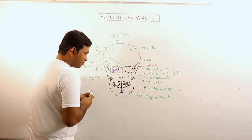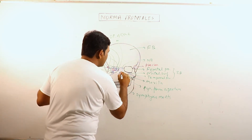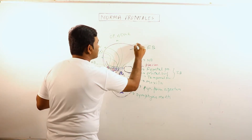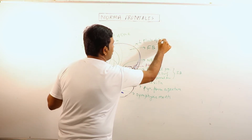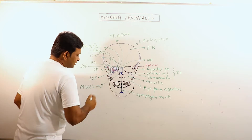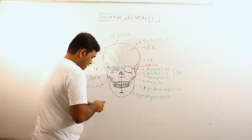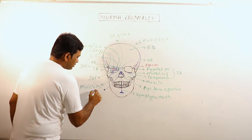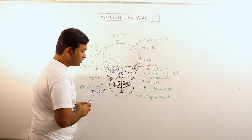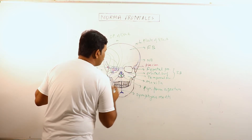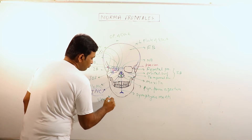Now if we discuss the pyriform aperture, we can see the perpendicular plate of ethmoid bone and the middle nasal concha. The superior nasal concha cannot be viewed from front. Now these are the inferior nasal concha, which are basically independent bones. And the lower part of the nasal septum is basically formed by the vomer bone.